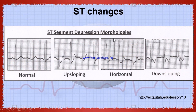Now let's see the ST segment depression morphologies. This is a normal ECG. This is upsloping ST segment depression. We can see here this is upslope. This is horizontal ST segment depression, and this is downslope depression.